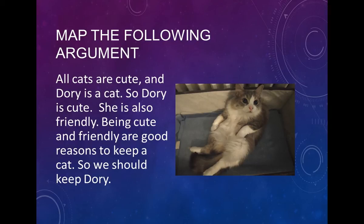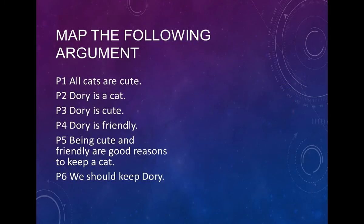The conclusion is we should keep Dory — and we did keep Dory, by the way. She's still living with us. Everything else in this argument is a premise. When you're taking a bit of text and breaking it down into premises, your premises should be complete statements in themselves: Dory is a cat, Dory is cute, Dory is friendly. Repeat the whole sentence you need, and don't include things like 'and' or 'therefore' or connectives between sentences. Extra bits that don't contribute get cut out and simplified. Don't be afraid to rephrase to make things clearer and shorter.